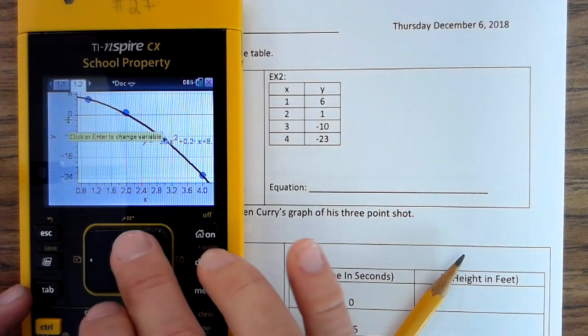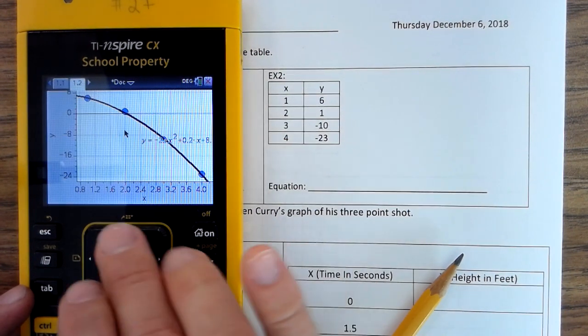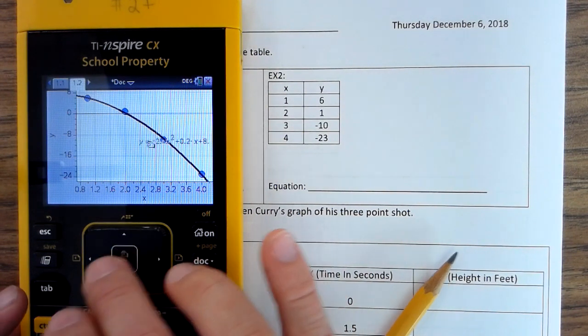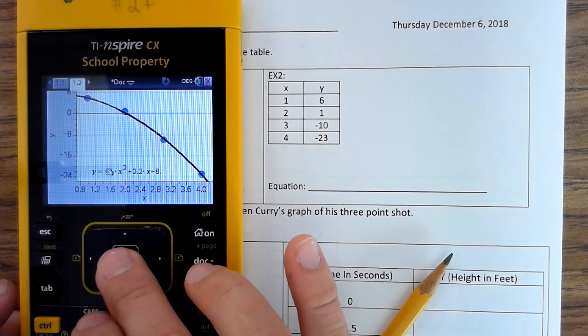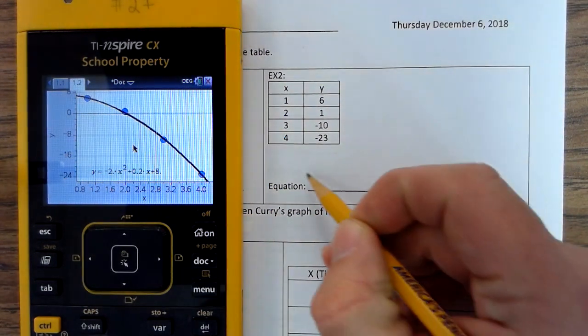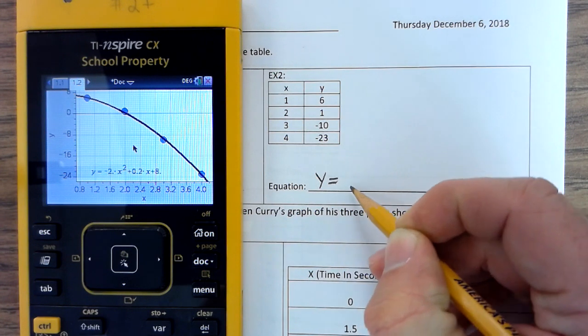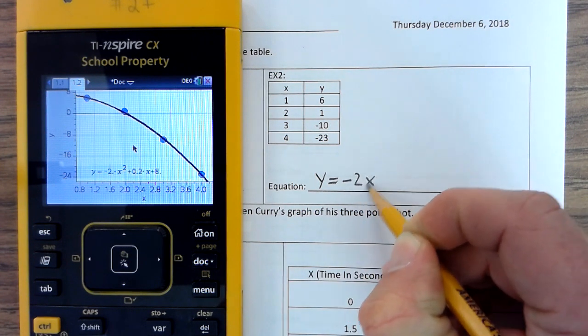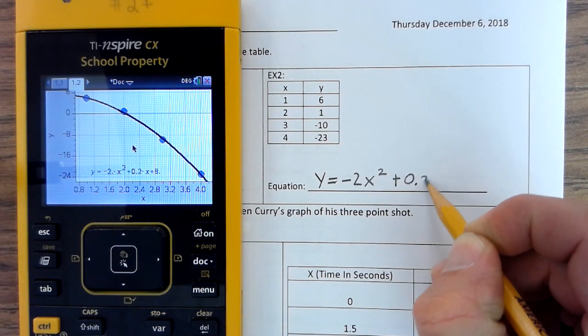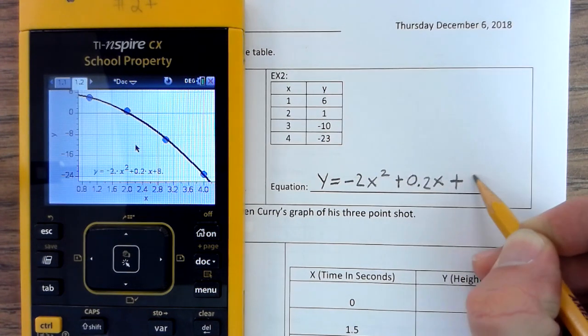Now again, I'm going to move my cursor over the equation. And then Control, click to grab it. Move it away. Click again to move the cursor. And then you have your cursor. Y equals negative 2X squared plus 0.2X plus 8.